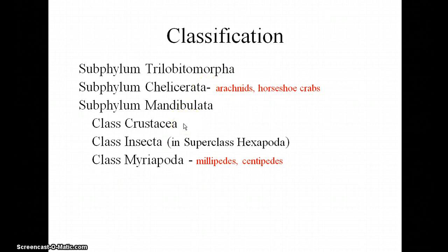Then we have crustaceans, which you're fairly familiar with, the decapods being the most common, but there are other kinds of crustaceans. Insects, and then myriapods, which include millipedes and centipedes. So if you think of those four major groups distributed across a couple of different subphyla, that will help to organize the arthropods in your head a little bit.